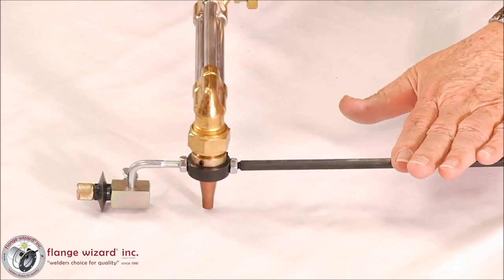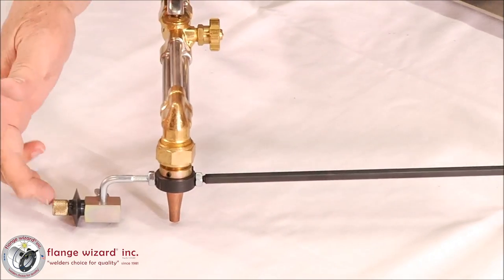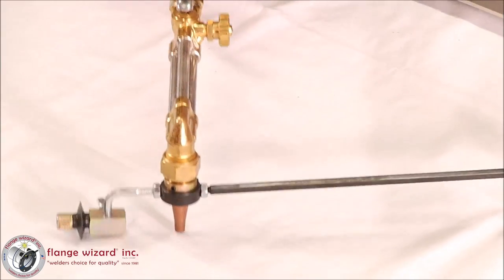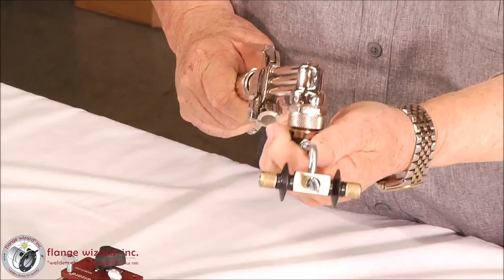Now by taking this off of this end right here and screwing it in this end, you'll have the cut on the outside of the wheel. So this is a very versatile little tool right here.